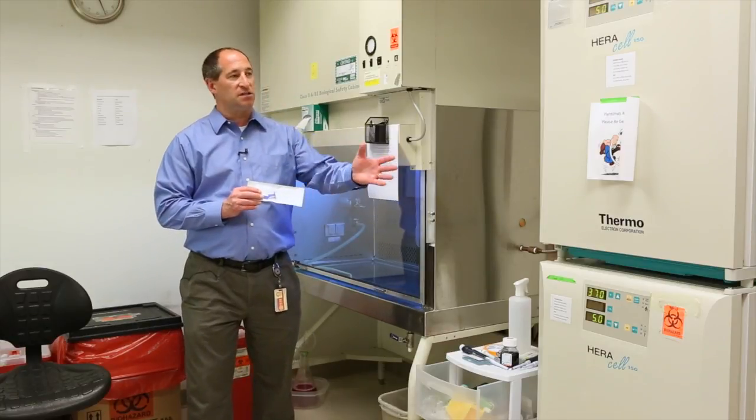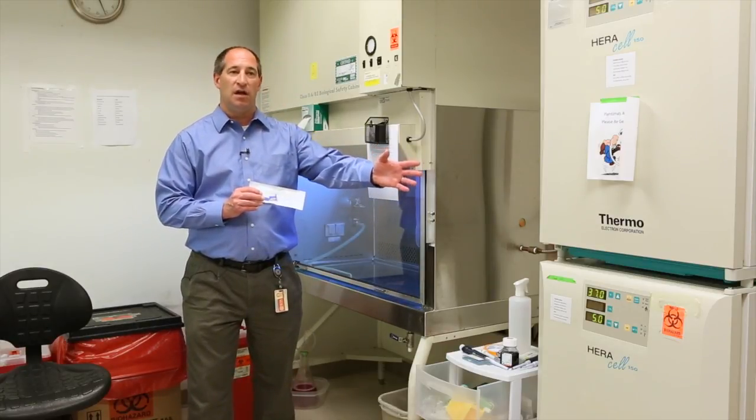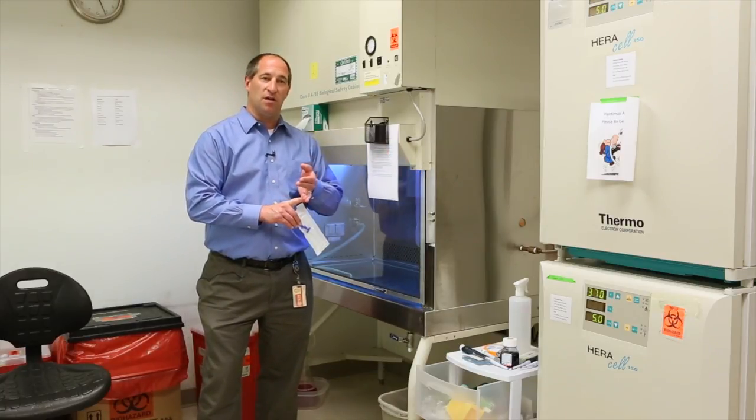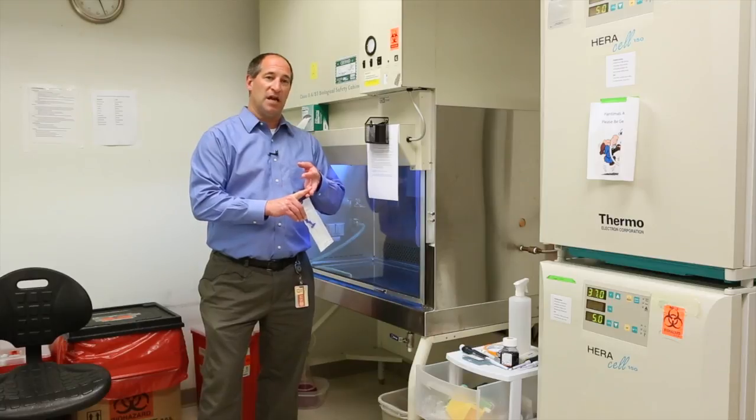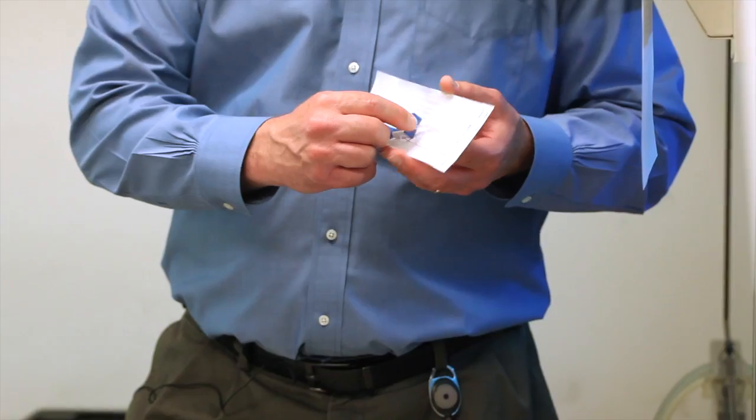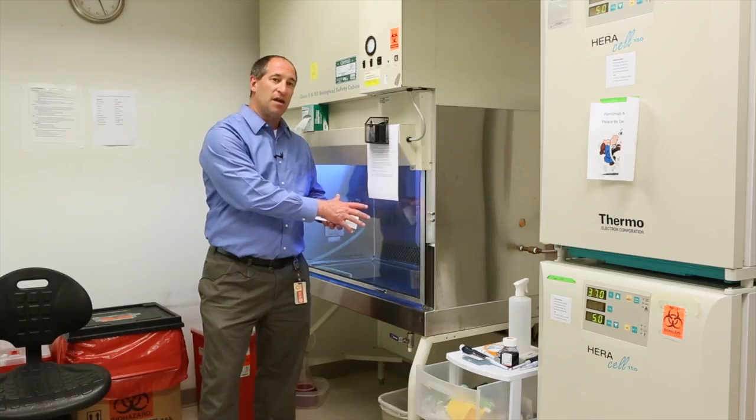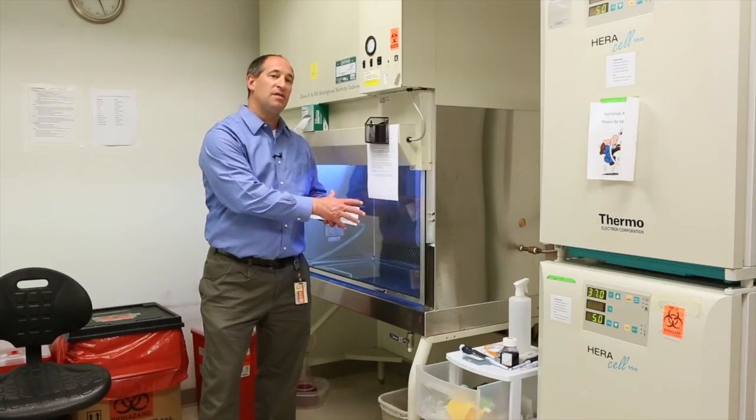We take the cells out of the incubator and keep track of the passage number, lot number, and how many cells we actually use. We add them into this little tube inside the sterile environment of this biosafety cabinet.